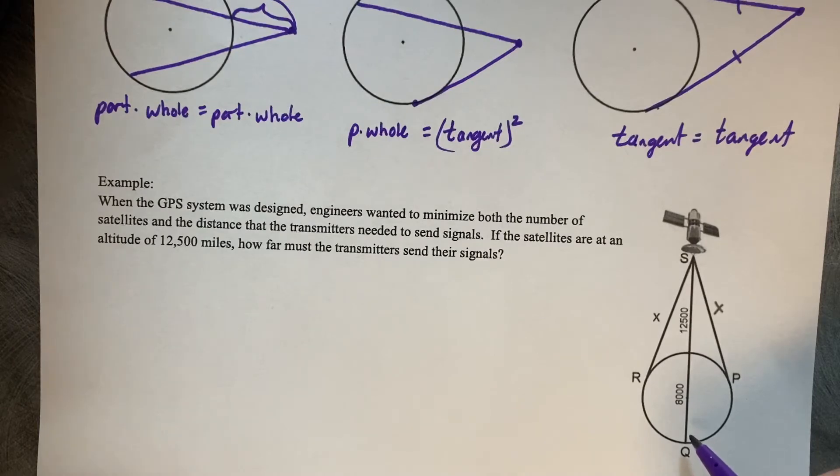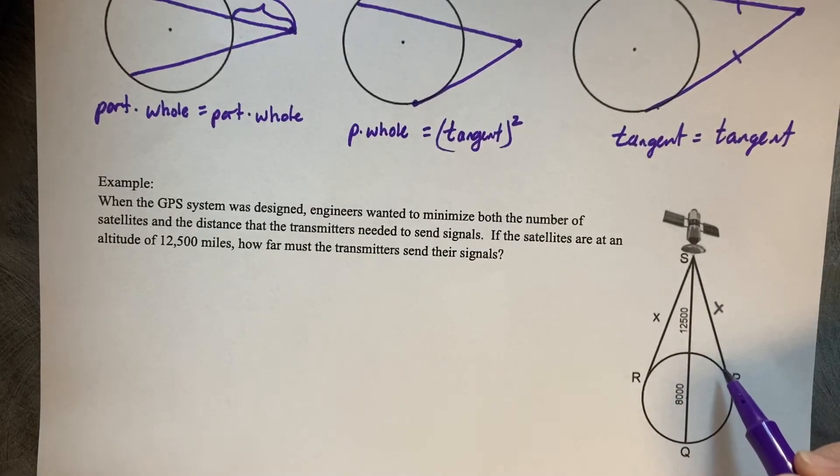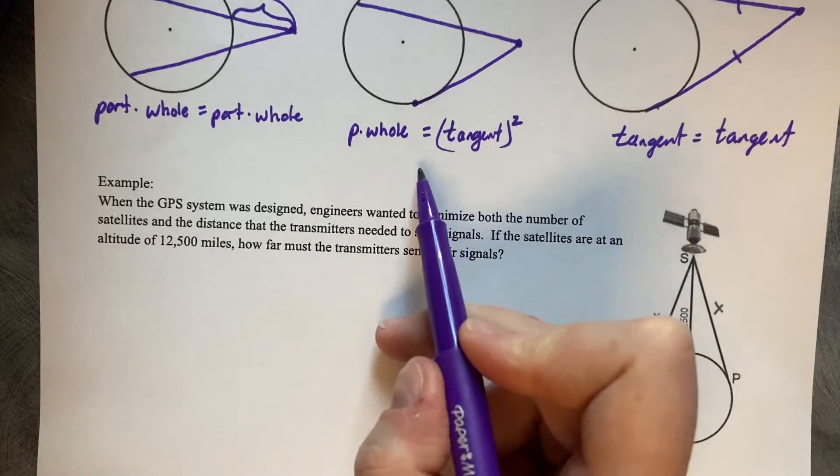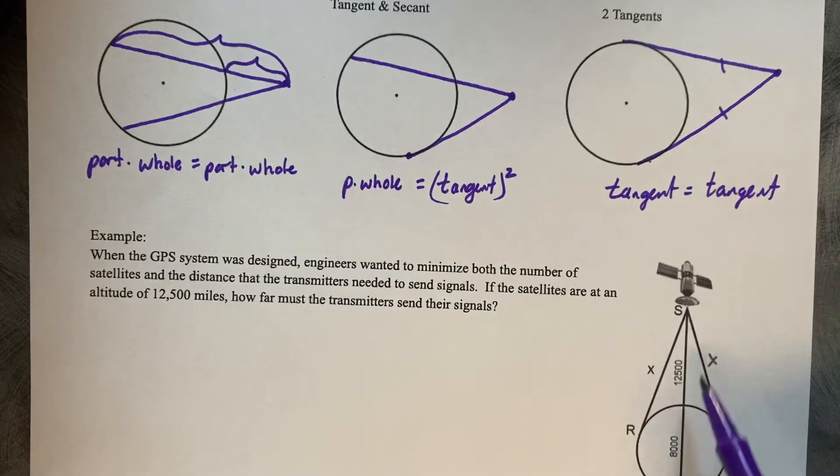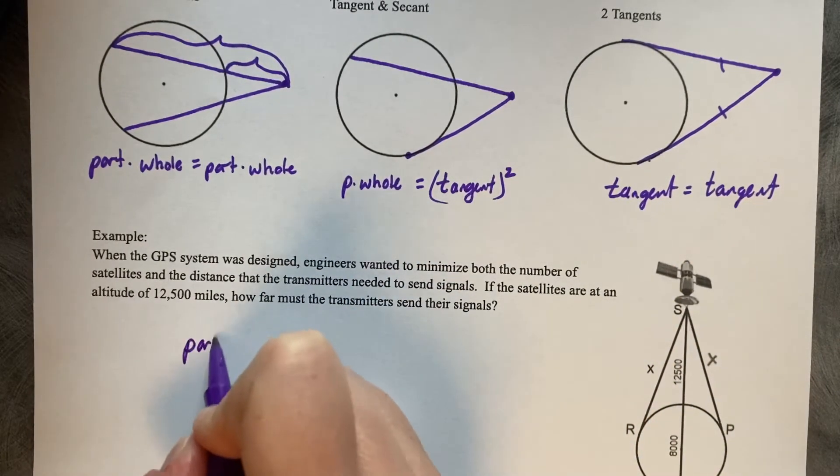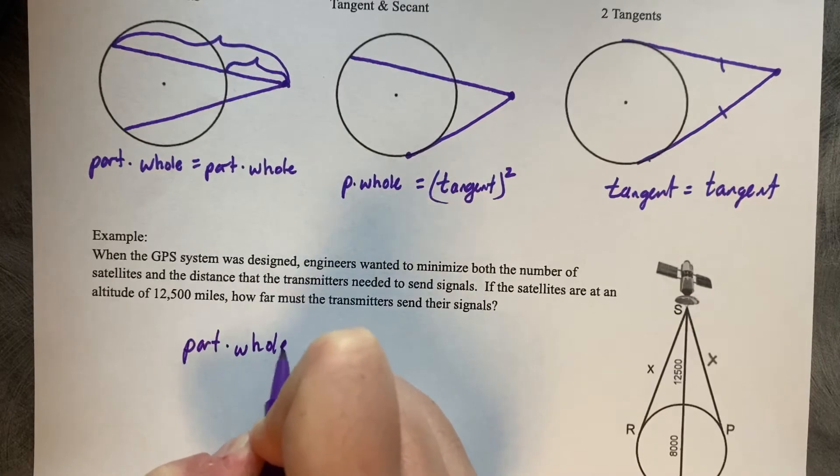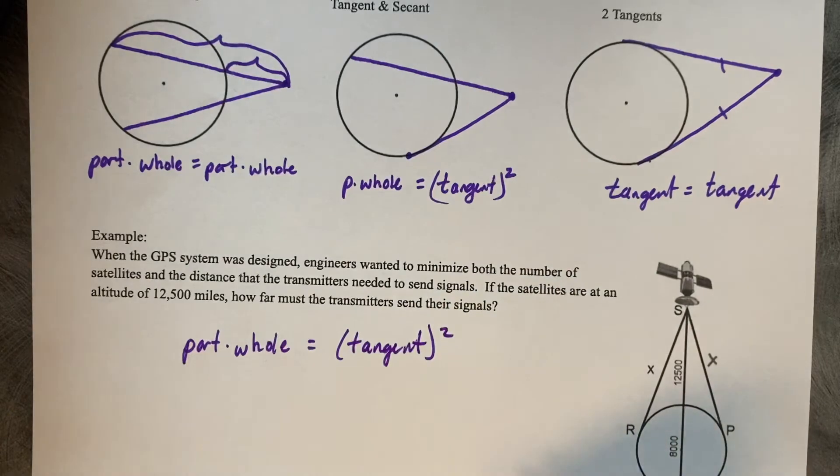So if you are going to set this up, we want the length of these tangents is what's going on. So we're going to be using this second tangent and a secant because we've got our secant and a tangent going on. So it's going to be part times whole equals the tangent squared.